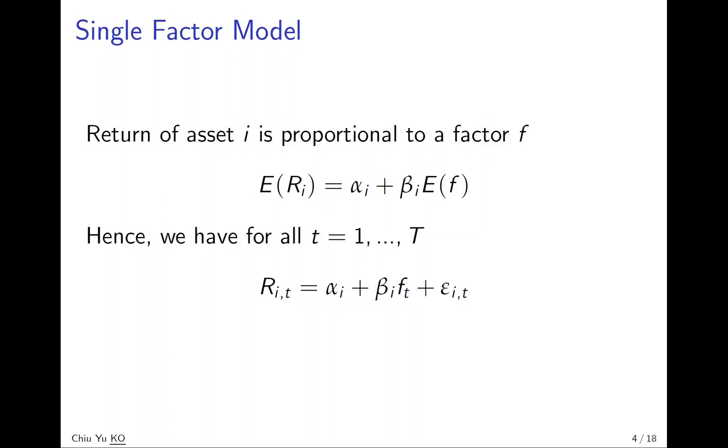Plus another term which is determined by the factor, the beta i times ft. Note that the factor doesn't have subscript i because this factor is common across every single stock, plus a random term. The random term depends on i and t, so each single stock at different time will have its own random term.